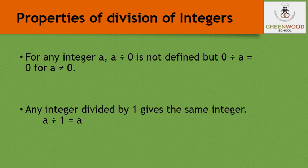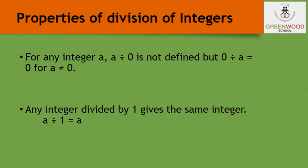Properties of division of integers: for any integer a, a divided by 0 is not defined. But 0 divided by a equals 0. So whenever you divide any number by 0, the answer is not defined. When 0 is divided by any number, the answer is always 0. And when any integer is divided by 1, the answer is that same integer.